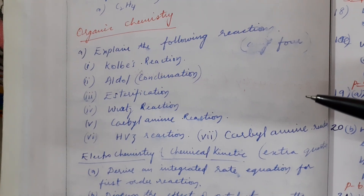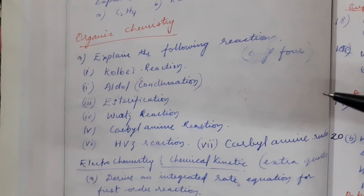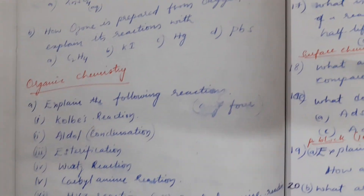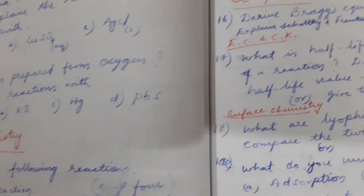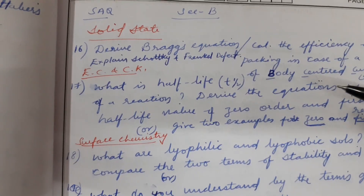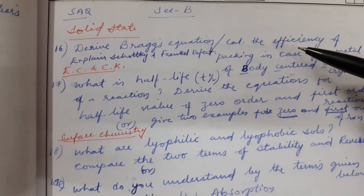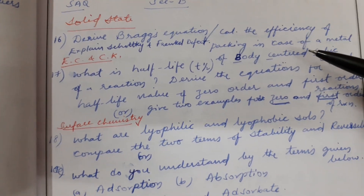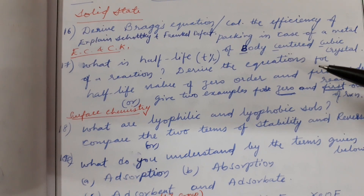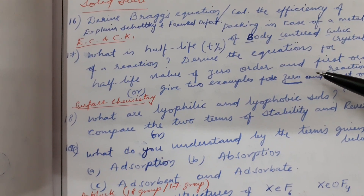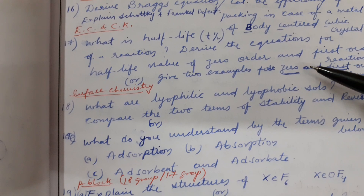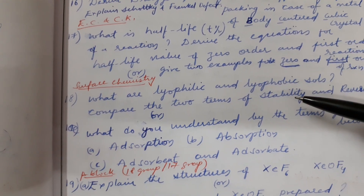Please go through the May paper also — a few questions will be coming, a few will be repeated from the May paper. Now SAQs — Section B SAQs. Chapter-wise: Solid State. Next chapter: Electrochemistry, Chemical Kinetics, and Surface Chemistry.